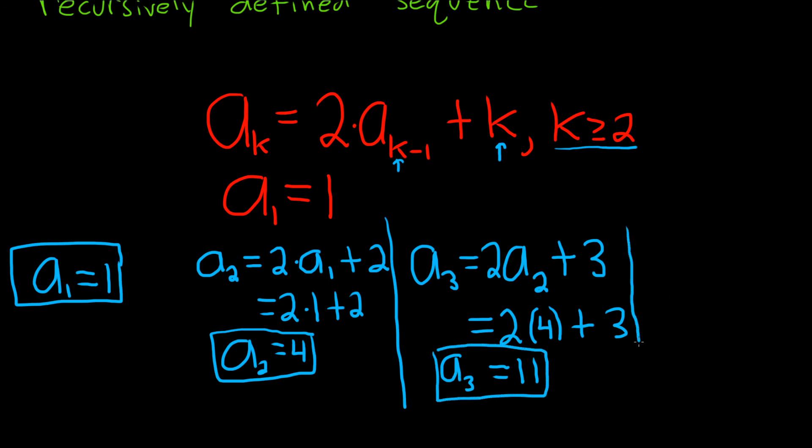The last one to do is a sub 4. So a sub 4 equals, now k is 4, so it's 2 times a sub 4 minus 1, which gives us 3, and k is 4, so plus 4.